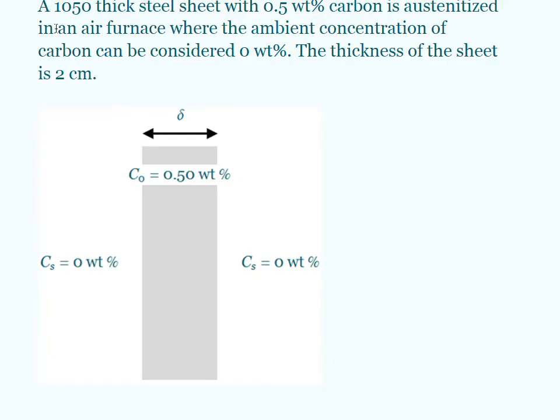It's a 1050 thick steel sheet with 0.5 wt% carbon. That's what our 50 means here. We're going to austenitize it in an air furnace where the ambient concentration of carbon is considered zero. So we're going to end up with this 0.5 weight percent initially throughout our steel. That's going to diffuse out into the environment leaving a region near the surface with carbon depletion. The sheet we're looking at is 2 centimeters thick, and we'll define what thick really means at the end.